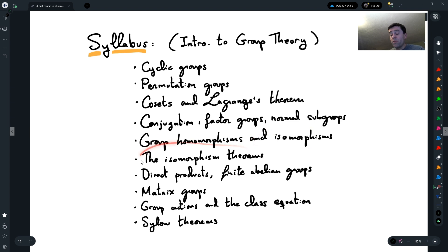Then we'll prove some of the most important theorems in abstract algebra and group theory, the isomorphism theorems for groups or the Noether theorems. We will talk about direct products and the classification of finite abelian groups. Now, we will not prove the classification of finite abelian groups.